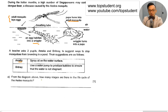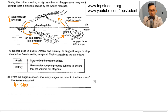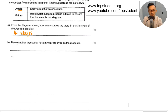From the diagram above, how many stages are there in the life cycle of the Aedes mosquito? There is stage 1, stage 2, stage 3, stage 4, and the adult mosquito goes back to the egg. So there are 4 stages in the life cycle.